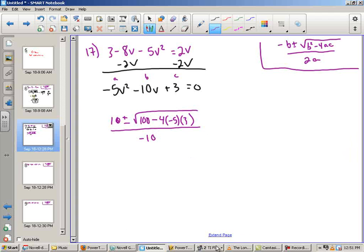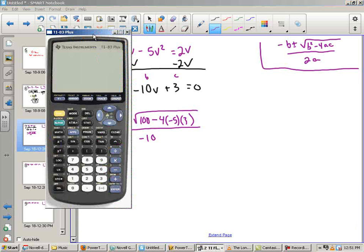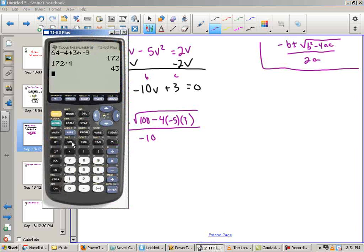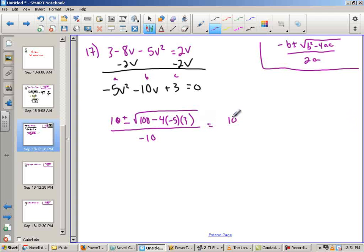So now I'm going to pull up my calculator and run those numbers again. I've got 100 minus 4 times negative 5 times 3 equals 160. So this equals 10 plus or minus square root of 160 all over negative 10.